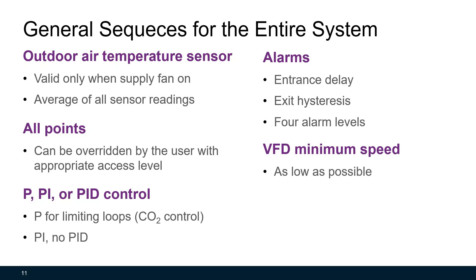For alarms, there are several ways to eliminate false alarms, and four alarm levels are defined in this guideline. For variable frequency drive (VFD) minimum speed, this guideline recommends as low as possible. Some VFD manufacturers may recommend at least 20% or 12 Hz as the minimum speed, but this guideline suggests you can go lower than that, down to even a few Hz.